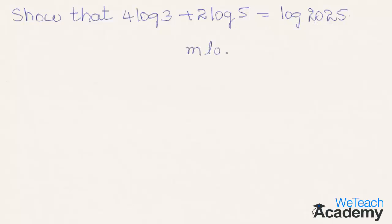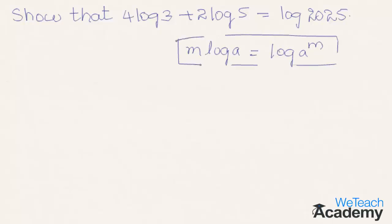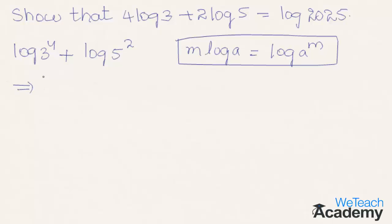Using the law of logarithm of power, we can write m log a is equal to log a to the power m. So 4 log 3 can be written as log 3 raised to the power 4, plus 2 log 5 is nothing but log 5 raised to the power 2. That implies we get log 3 to the power 4, which is equal to log 81, plus log 5 squared, which is log 25.